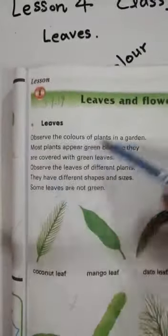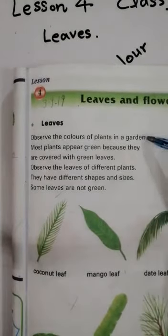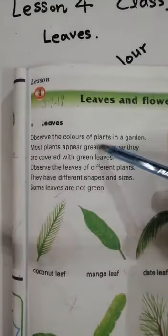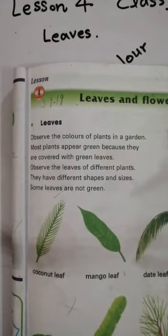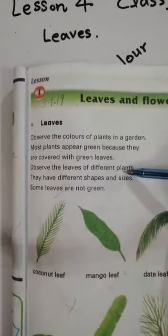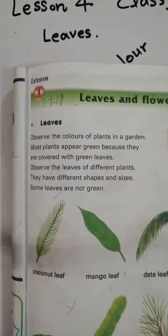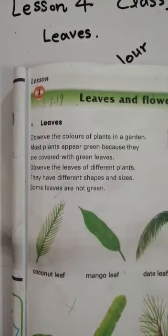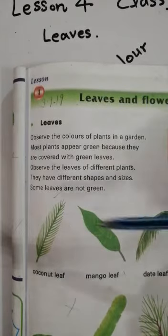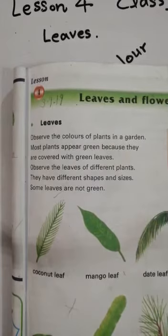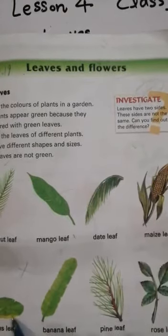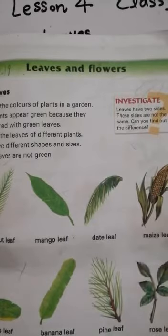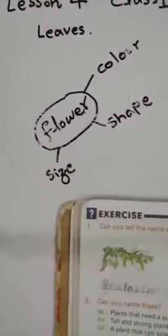پہلے ہم نے جو پڑھا اس میں سے go through ہو جائیں — جو ہم نے leaf کے بارے میں پڑھا: observe the color of plants in a garden — most plants appear green because they are covered with green leaves۔ Observe the leaves of different plants — یہ different plants کے leaves observe کریں جو اس page پر دیے گئے ہیں، ان کی shapes بھی different ہیں، ان کے size بھی different ہیں۔ And some leaves are not green even — کچھ leaves ایسے ہیں جو green بھی نہیں ہیں — rose leaves میں آپ کو yellow color نظر آ رہا ہے۔ تو کچھ ایسے ہیں جن کے colors تھوڑے سے change ہو رہے ہیں۔